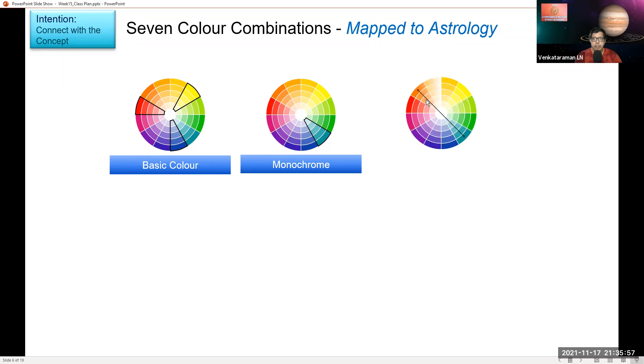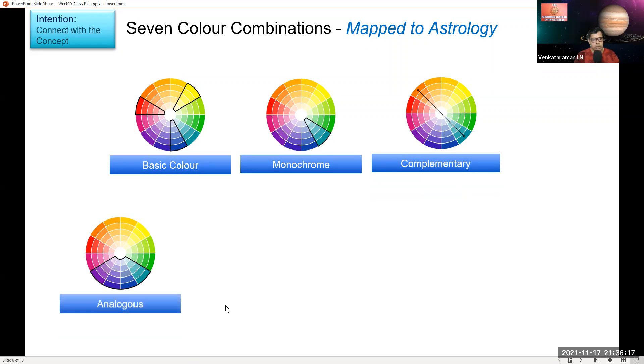Then you have possibly combining with the direct opposite 180 degree color, and that is known as complementary. Then we have combining colors which are like adjacent to each other, and those are called analogous combination. Then we have this kind of combination, two among the analogous and one on the opposite side, and that is called split complementary.